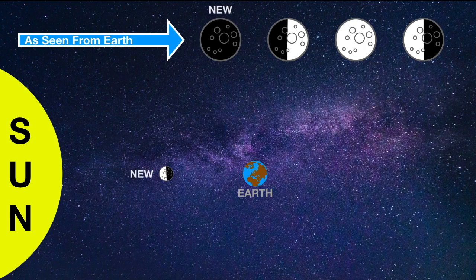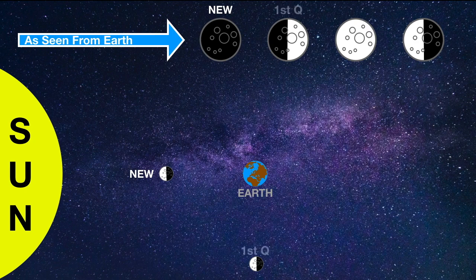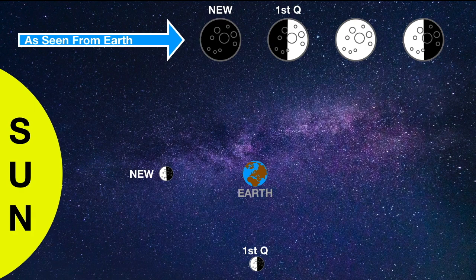The first quarter occurs when the Sun, Earth, and moon form a 90 degree angle, which means that from Earth we can see half the lit side and half the dark side.